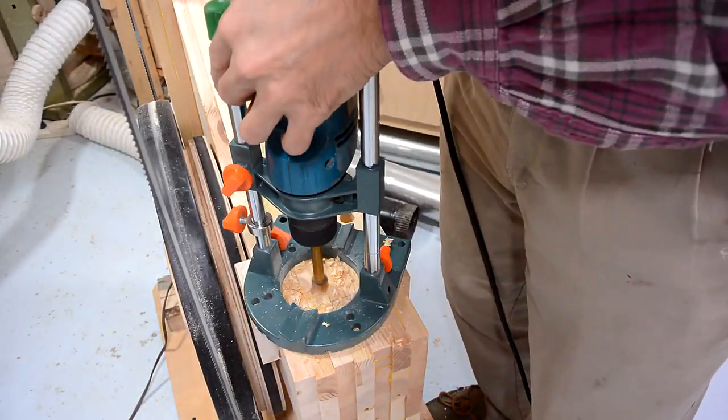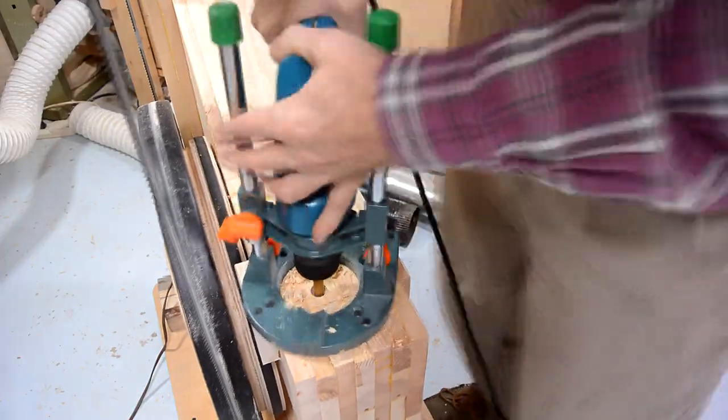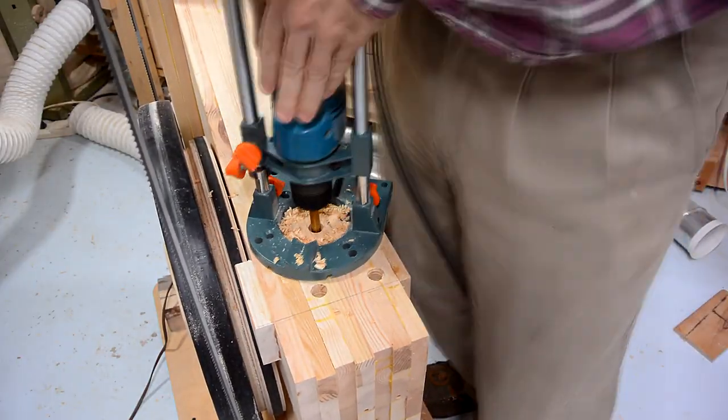I should have used my drill guide on the first two holes, as well, because I got them in there crooked. If you want to buy a jig like that, it's called a drill guide. Google it.